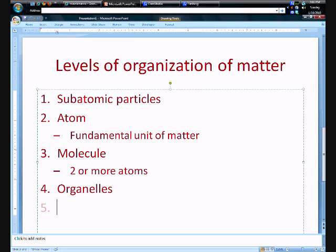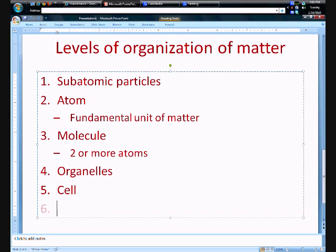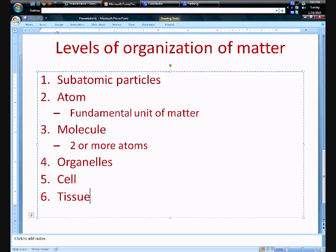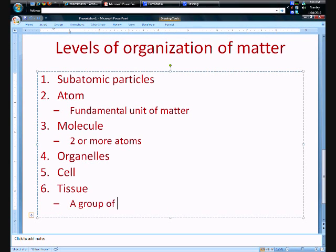Essentially, organelles make up a cell. Number six - what's a group of cells? Basically they build up tissue. The book definition is a group of cells integrated to do a specific task. That is what a tissue is.